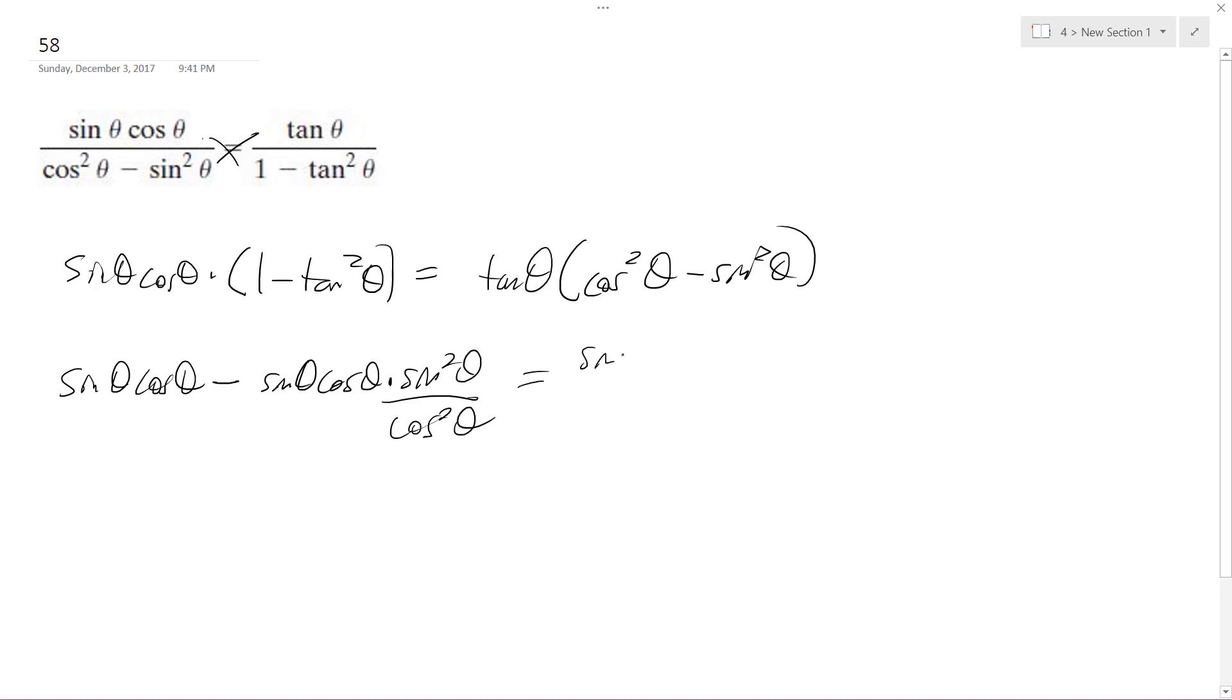to sine theta cosine theta times cosine squared theta minus sine theta, this is the tangent portion, cosine theta times sine squared theta. Okay,